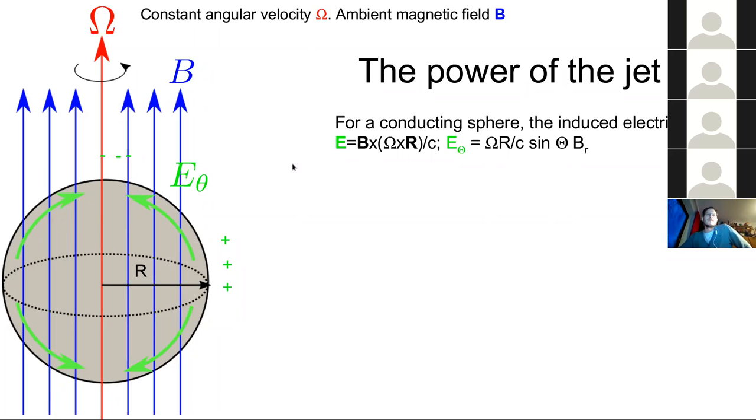And just a V cross B essentially. And that electric field leads to a polarization of the sphere. So you have the positive charges sitting right here on the equator and the negative charges sitting up here. And that's well known from electrodynamics. But a jet seems to transport energy. So how can we tap energy out of such a scenario?